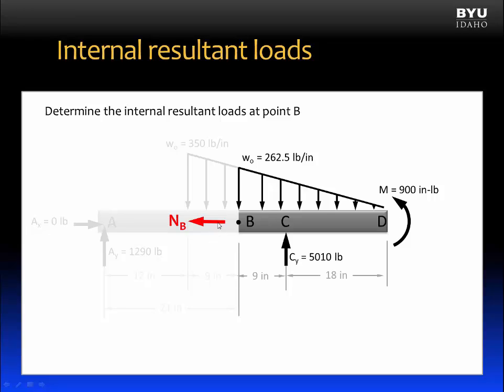First, there is an internal resultant normal force acting through the centroid of the cross section at B. There is also a shear force, V sub B,